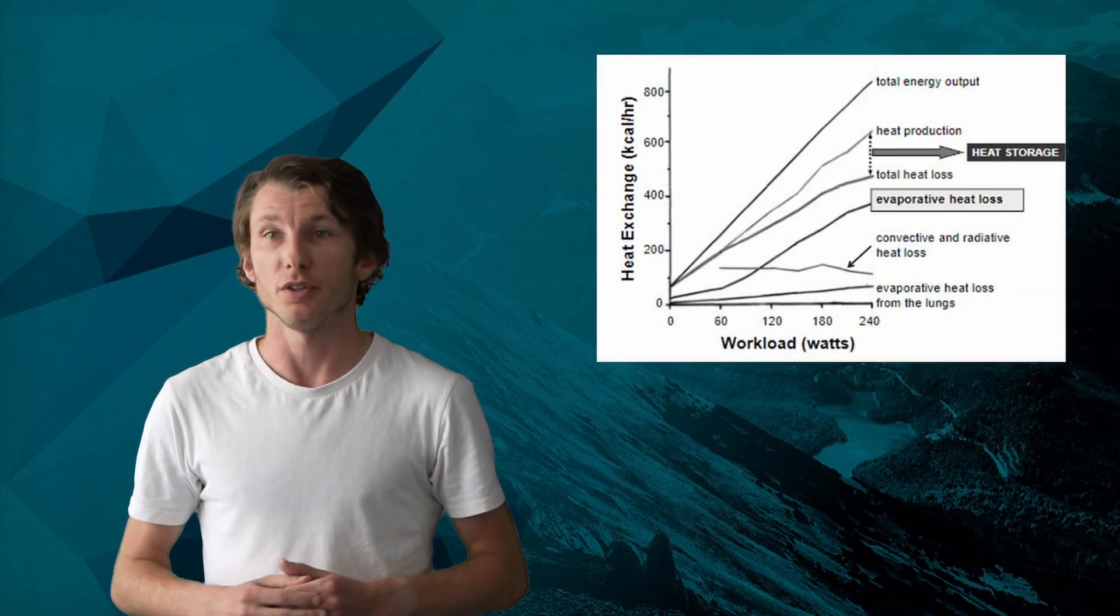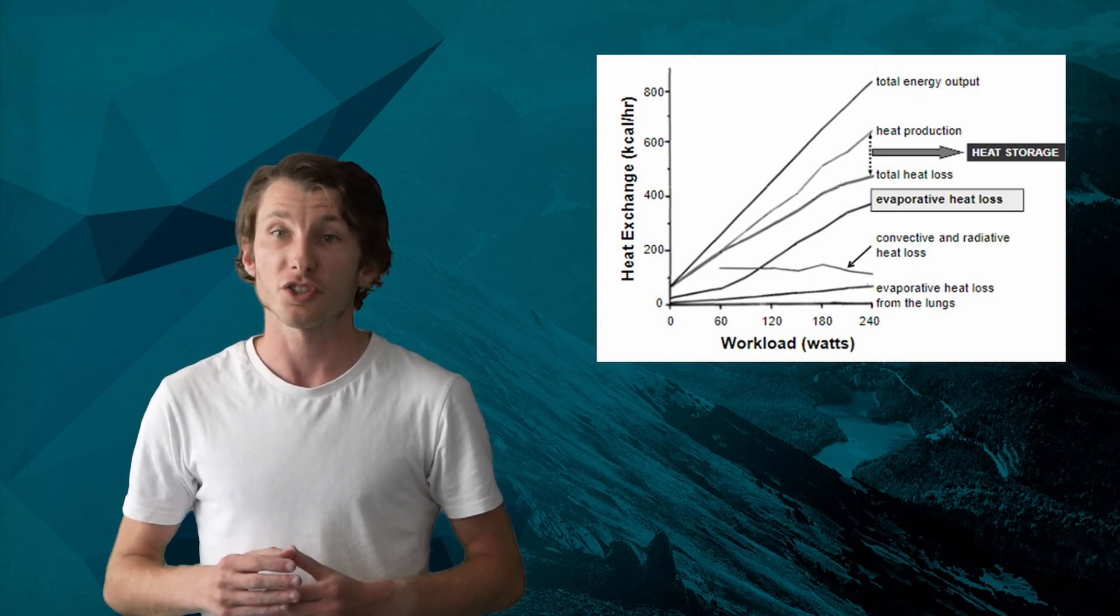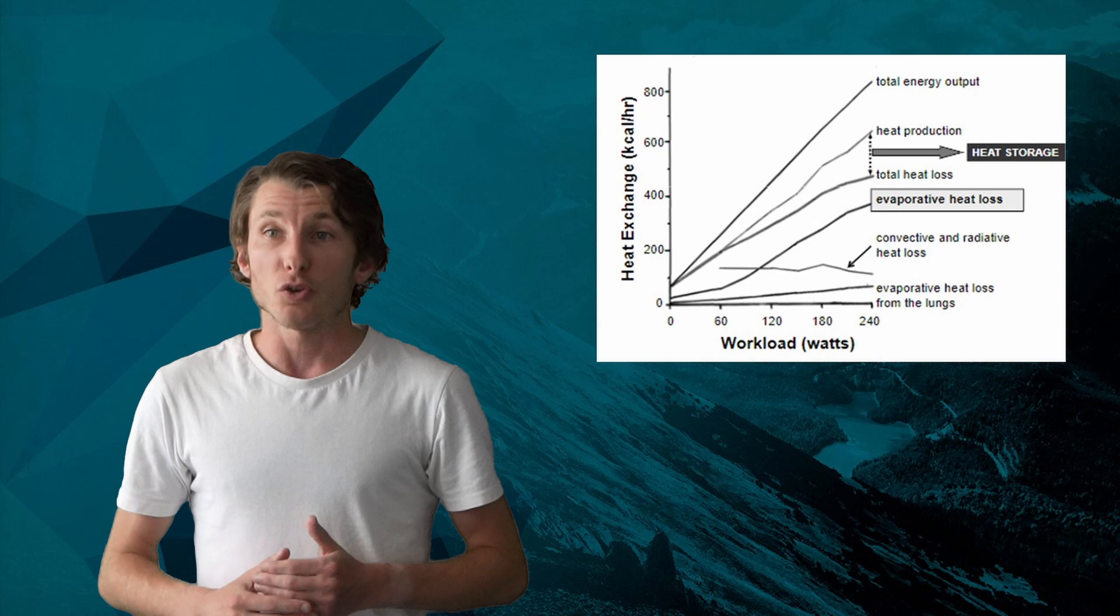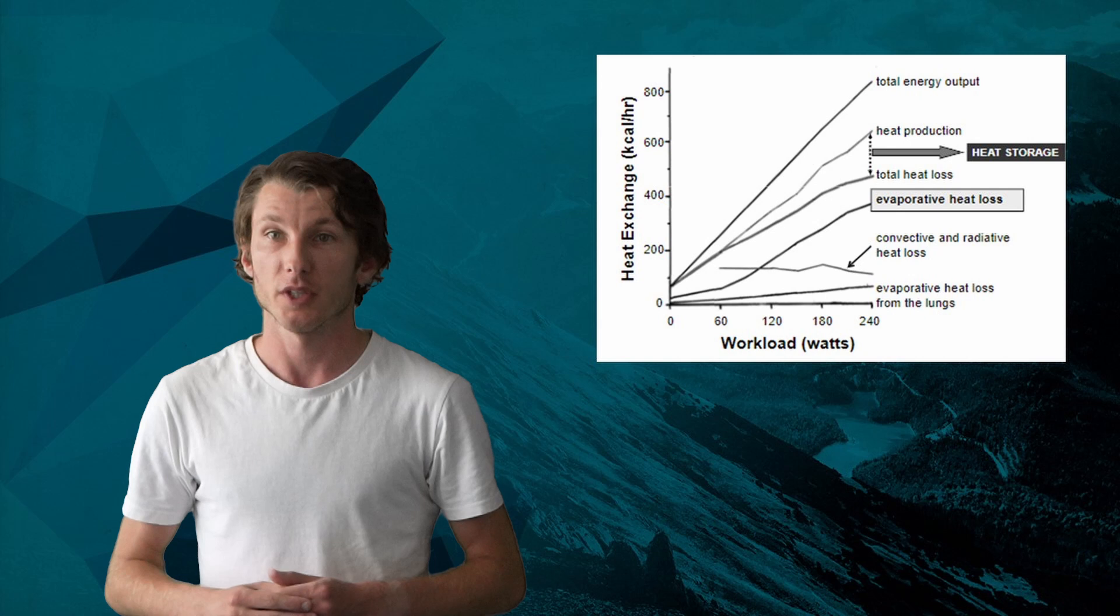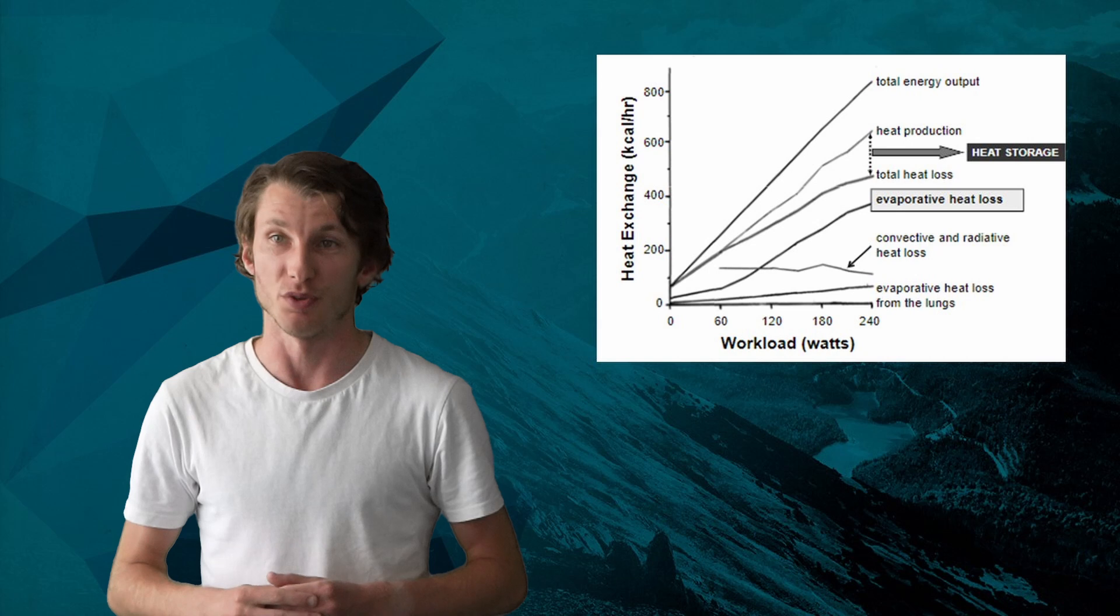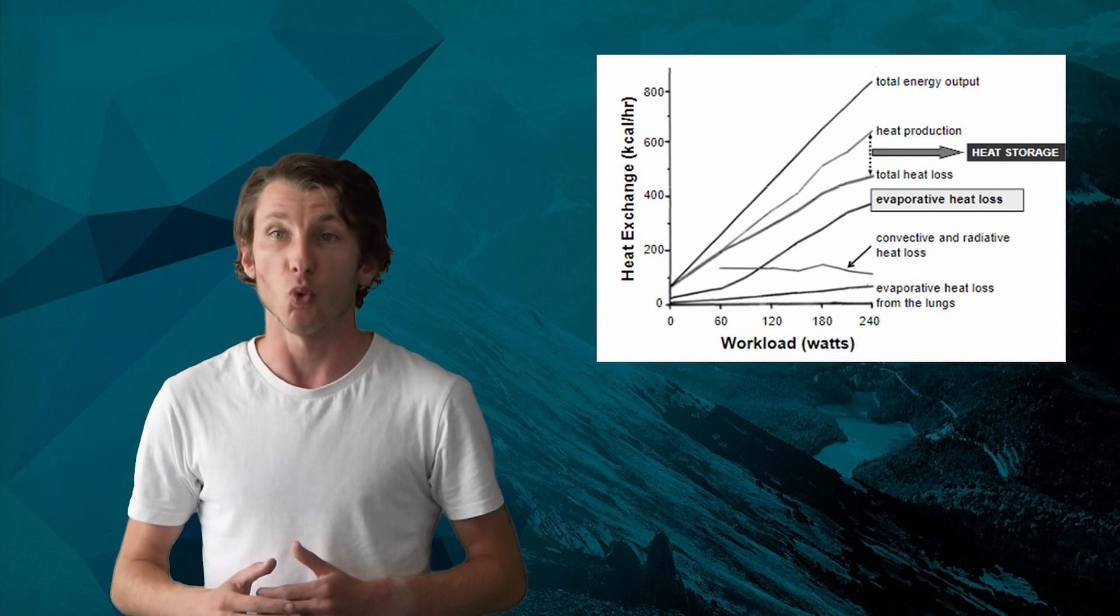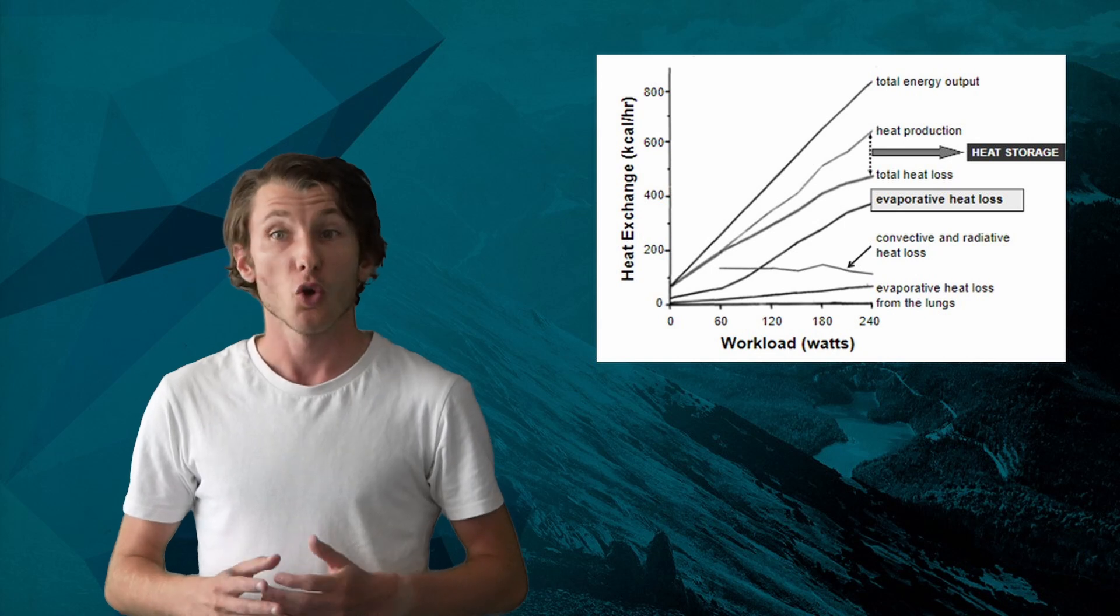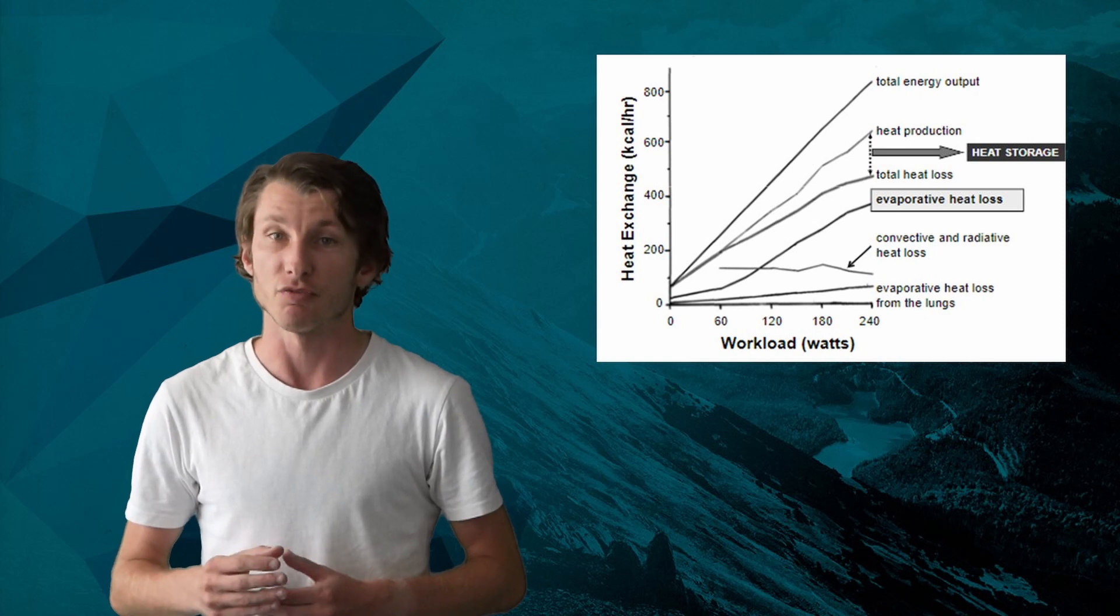In this graphic, you can see as workload increases, so does the total energy output. When we add all of these mechanisms together of total temperature regulation, you can see it does not take away the total heat produced. Therefore, we must reduce our total energy output in order to limit the amount of heat stored in our bodies. We do this by reducing our pace so exercise intensity is reduced.